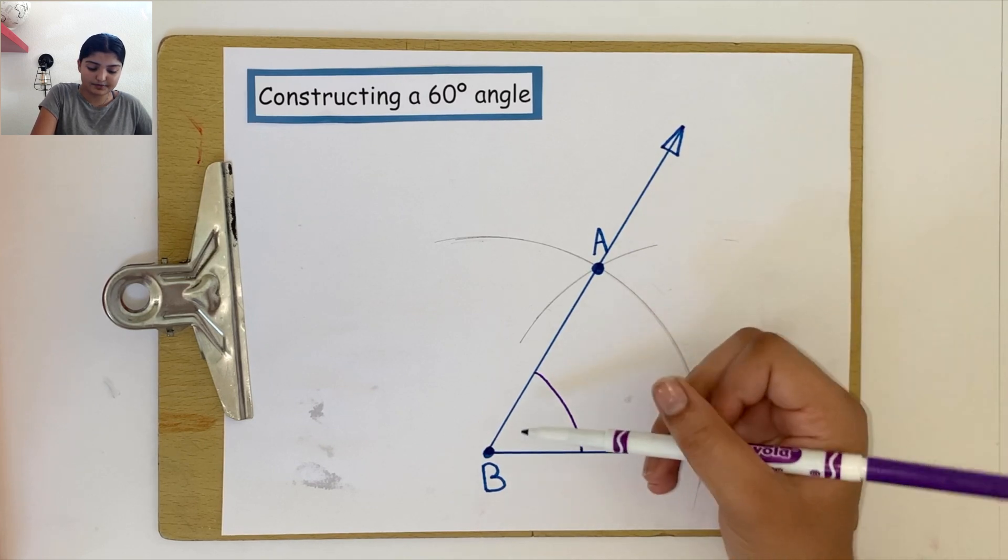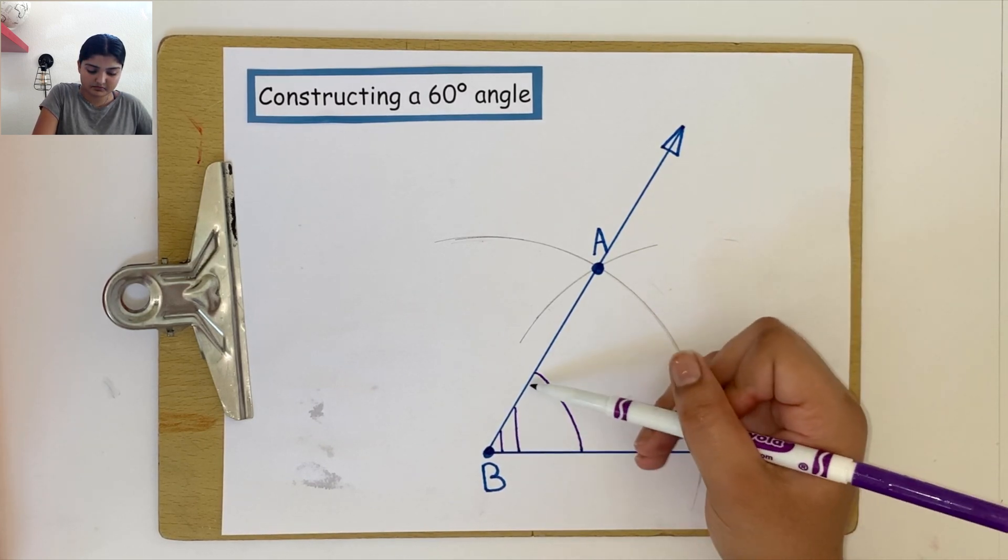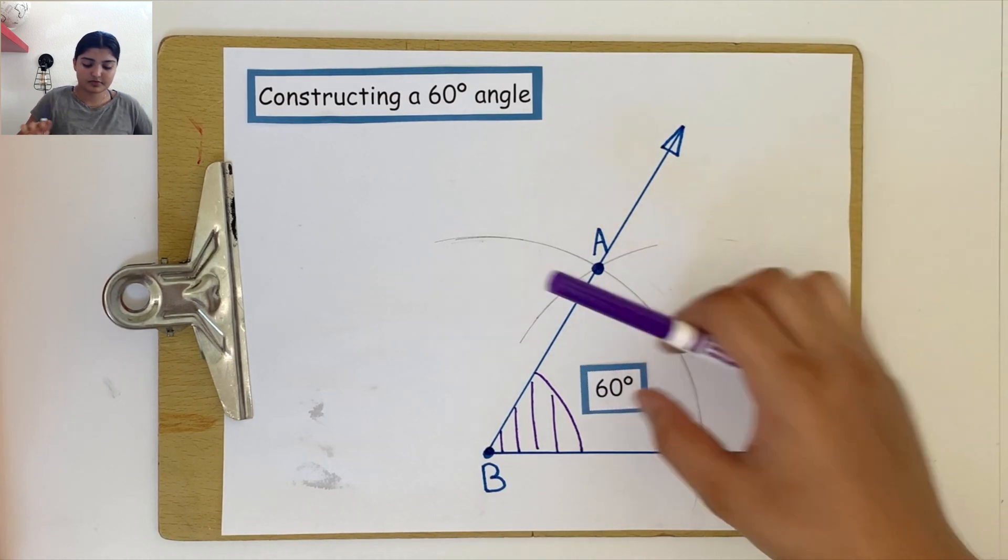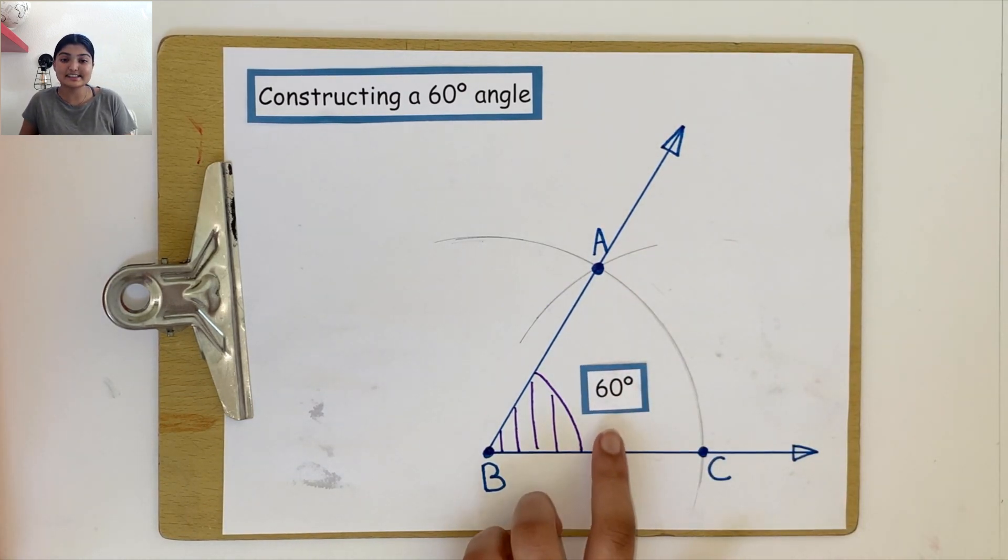This gives us an angle which measures 60 degrees.